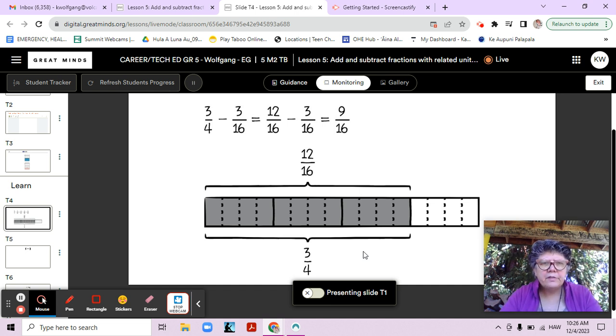You might have noticed in the subtraction expression that we started with three-fourths minus three-sixteenths and then we said that's equal to 12 sixteenths minus three-sixteenths and that the answer is nine-sixteenths. You might wonder why they made a tape diagram and you might wonder how they did that subtraction. What steps did the student take to subtract and how do you know?